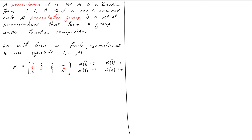To compose two permutations together, we work right to left, just like we did when working with D4. The process is quite straightforward in this notation. Let's define two permutations — sigma and gamma — working with five elements this time.